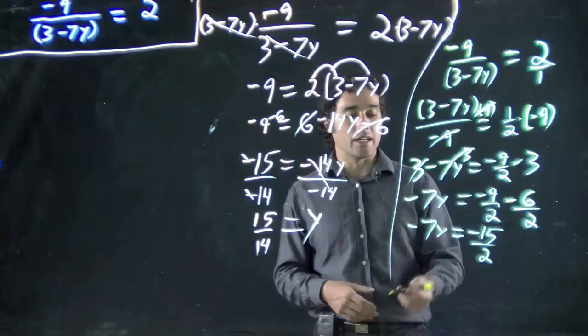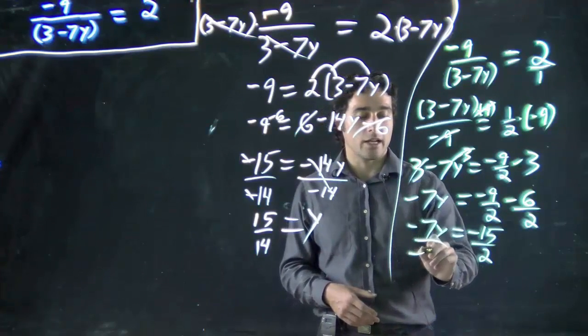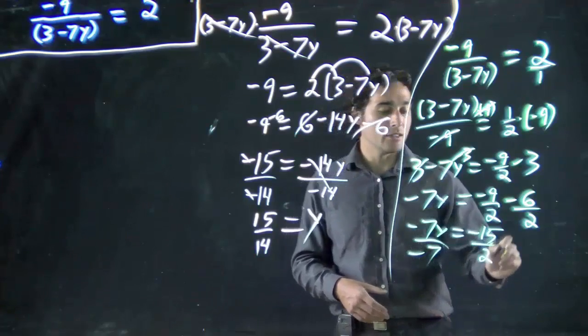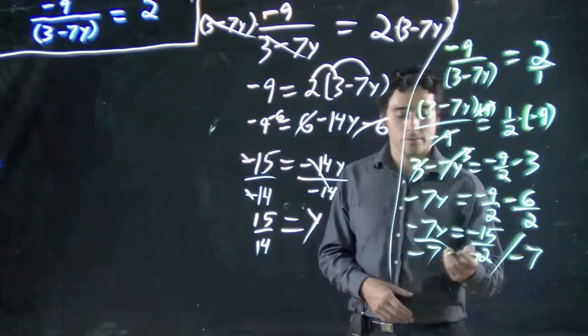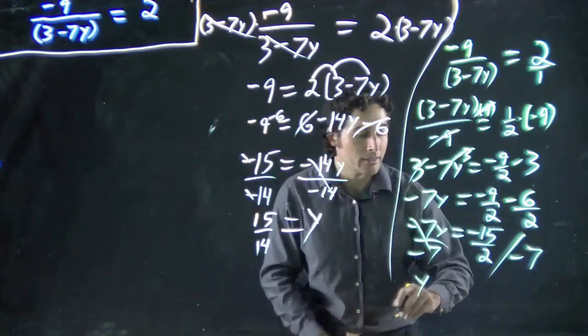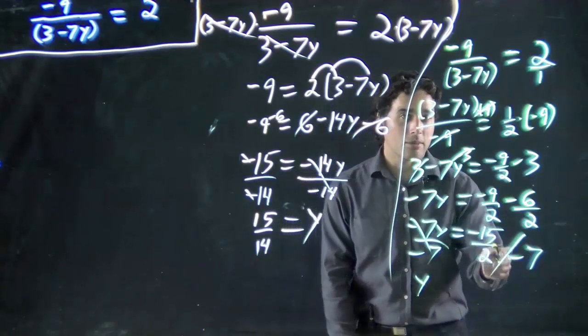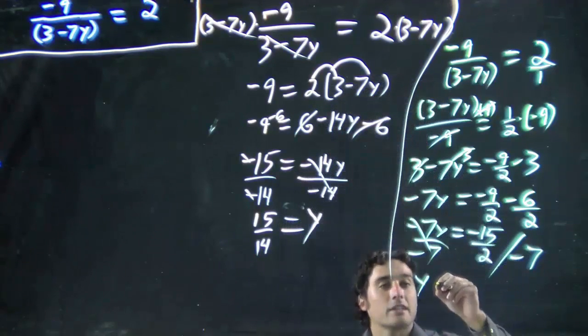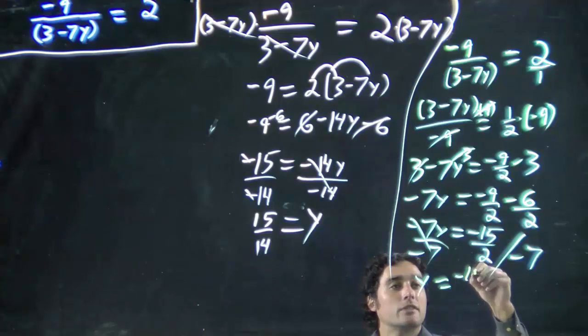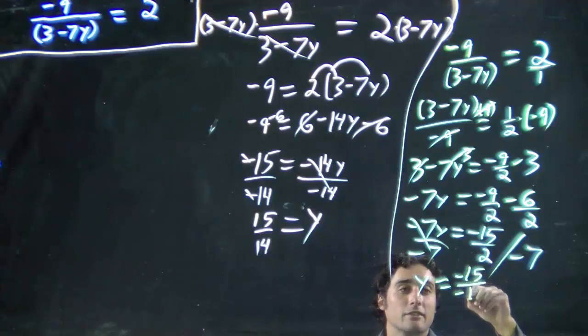Now I've got to get rid of the minus 7, so I divide by minus 7. Divide by minus 7. It leaves a y right here for me. And these two things on the bottom, remember, combine. So I'm actually going to get minus 15 all over minus 14.